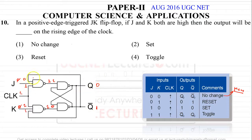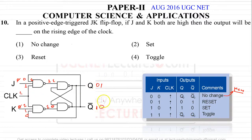When we apply J equals 1 and K equals 0, with clock equals 1, the output goes to 1 and 0. This state is called the set state.